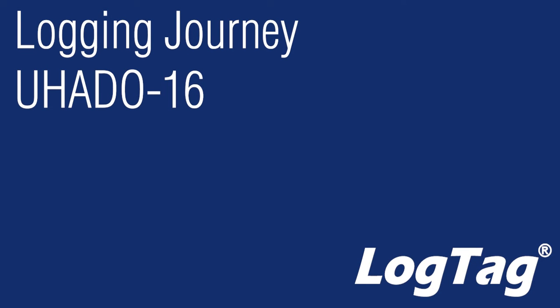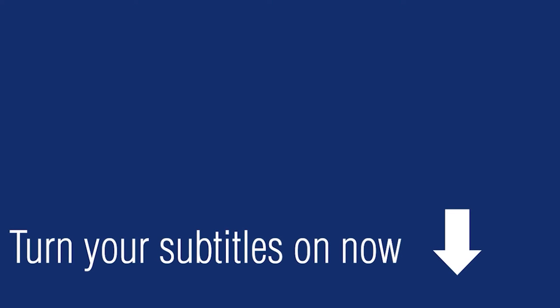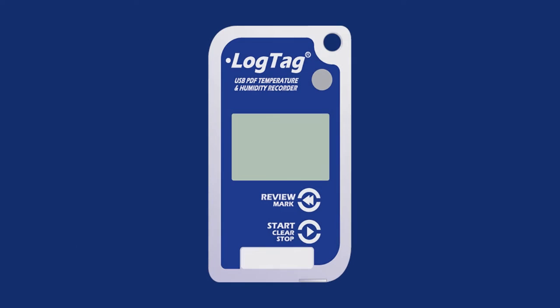When using one of LogTag's HAXO-16 loggers, users are able to record and display temperature and humidity readings simultaneously. During logging, the display will provide the user with information such as the current temperature and humidity readings and any alarm excursions. The Start Clear Stop button can be used to start and stop the unit or to clear an alarm.